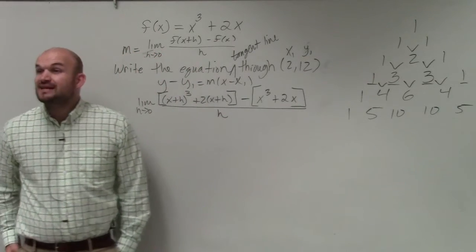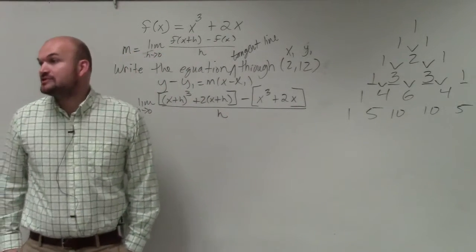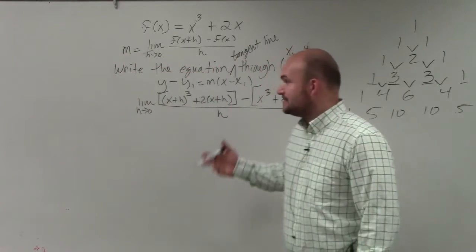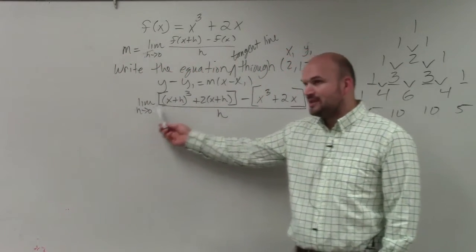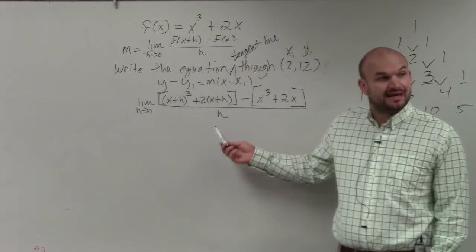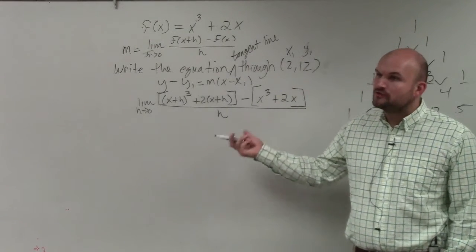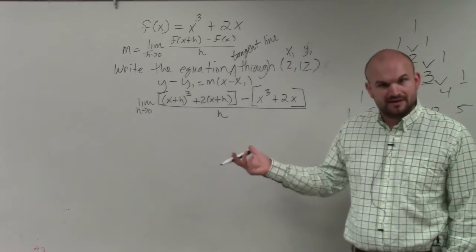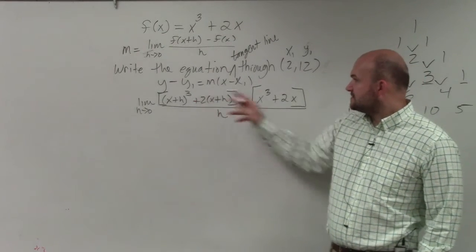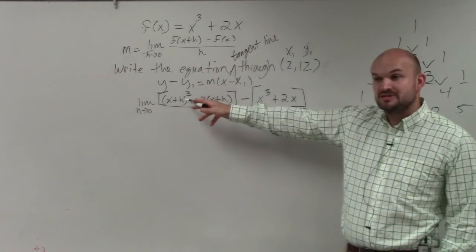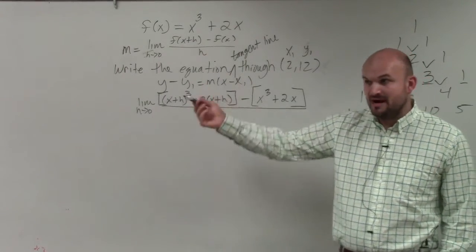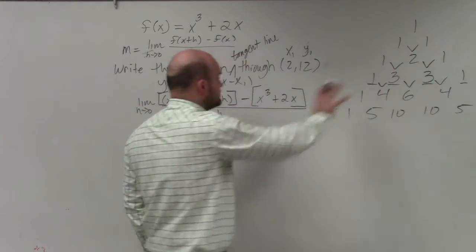So we need to determine the limit now as h goes to 0. And what we practiced last chapter is, if we can't apply direct substitution, which in this case we cannot, we need to obviously look for algebraic ways to simplify the expression. Well, obviously, we have a lot of things we can simplify. This x plus h cubed, as we just talked about the binomial expansion, looking at Pascal's triangle.